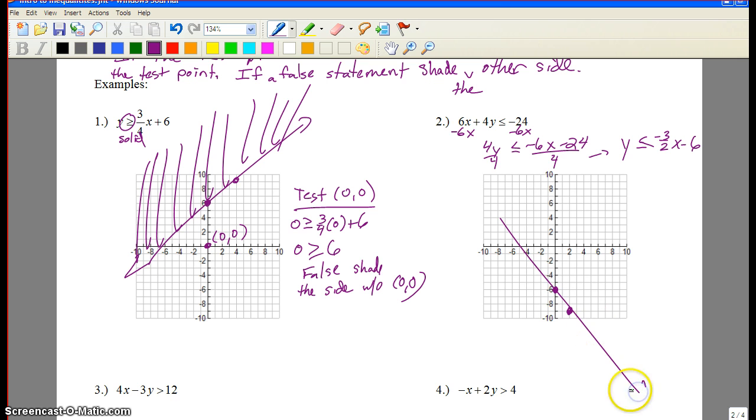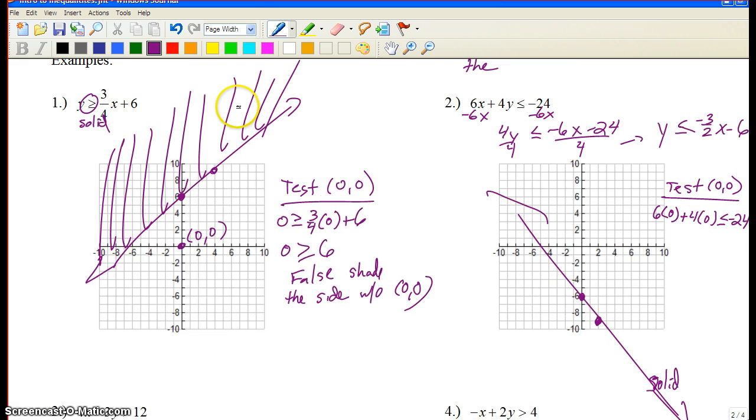Solid. By the way, if you want me to make sure to know that you had a solid line there, just write the word solid next to it, and that communicates it appropriately. After that, we test a point. Testing zero, zero works most of the time, unless it's on the line. And we go back to the original, because oftentimes that's the easiest in the original. Is that true?